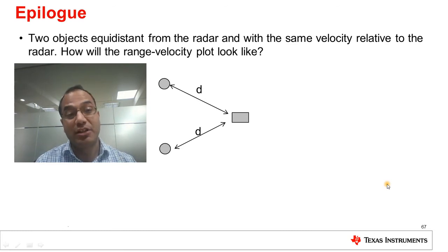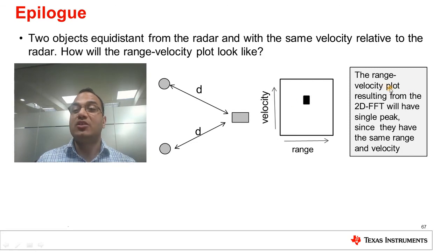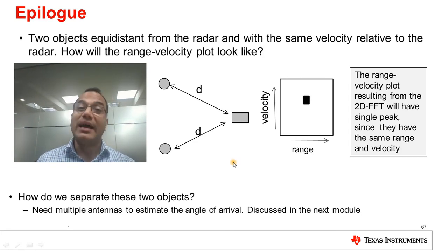Over the past three modules, we have had quite an in-depth look at range and velocity estimation in an FMCW radar. So, we learnt that if there are two objects equidistant from the radar, but with different velocities related to the radar, these objects will show up as a single peak in the range FFT, but will be separated out by the Doppler FFT. Thus, they will show up as two peaks in the 2D FFT plot or the range velocity plot. But what if there are two objects equidistant from the radar and having the same velocity relative to the radar? How will the range velocity plot look like? Well, the range velocity plot resulting from this 2D FFT will have a single peak since both these objects have the same range and velocity relative to the radar. How then do we separate these two objects? It turns out that for that, you will need multiple antennas to be able to estimate the angles of arrival of these objects. And this is something that is discussed in the next module.